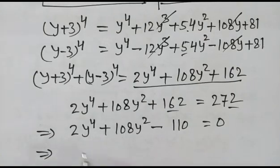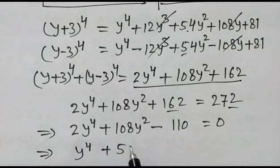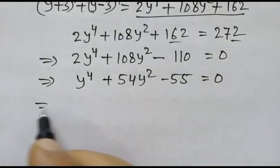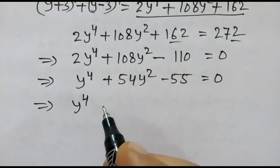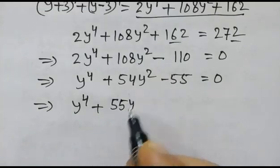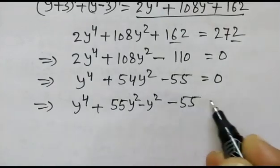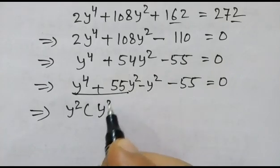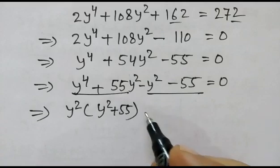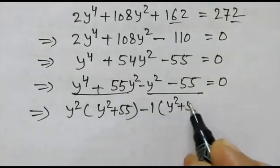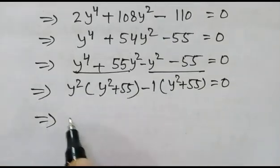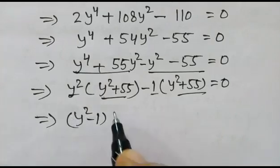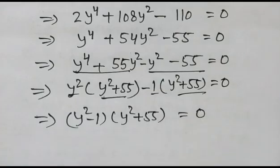Dividing the whole equation by 2, we get y⁴ plus 54y² minus 55 equals 0. We factorize this as y⁴ plus 55y² minus y² minus 55 equals 0. Taking y² as common from the first two terms and minus 1 as common from the last two terms: y²(y² plus 55) minus 1(y² plus 55) equals 0, giving (y² minus 1)(y² plus 55) equals 0.